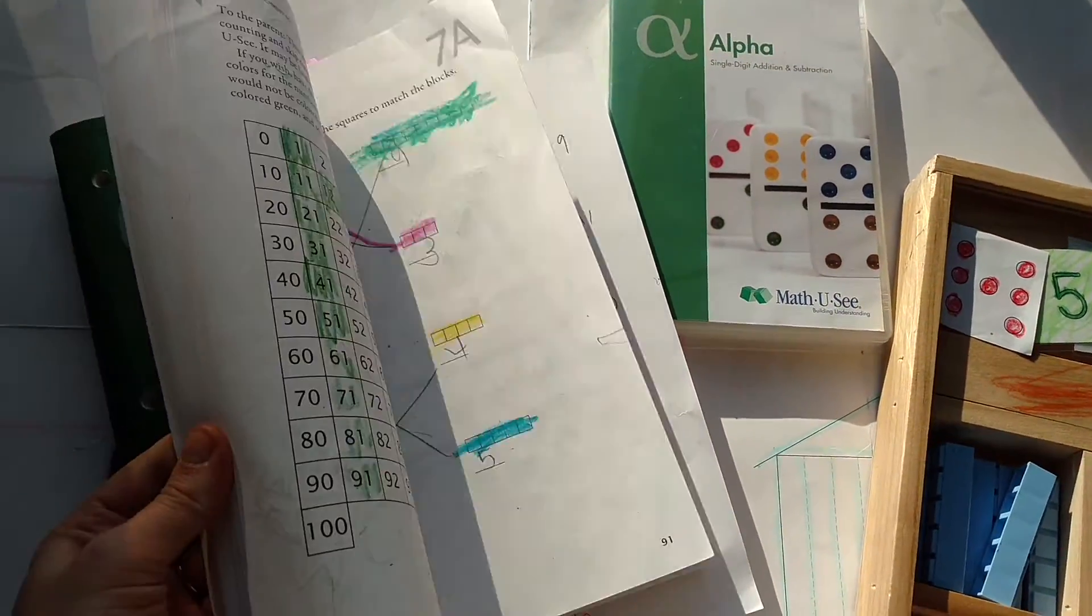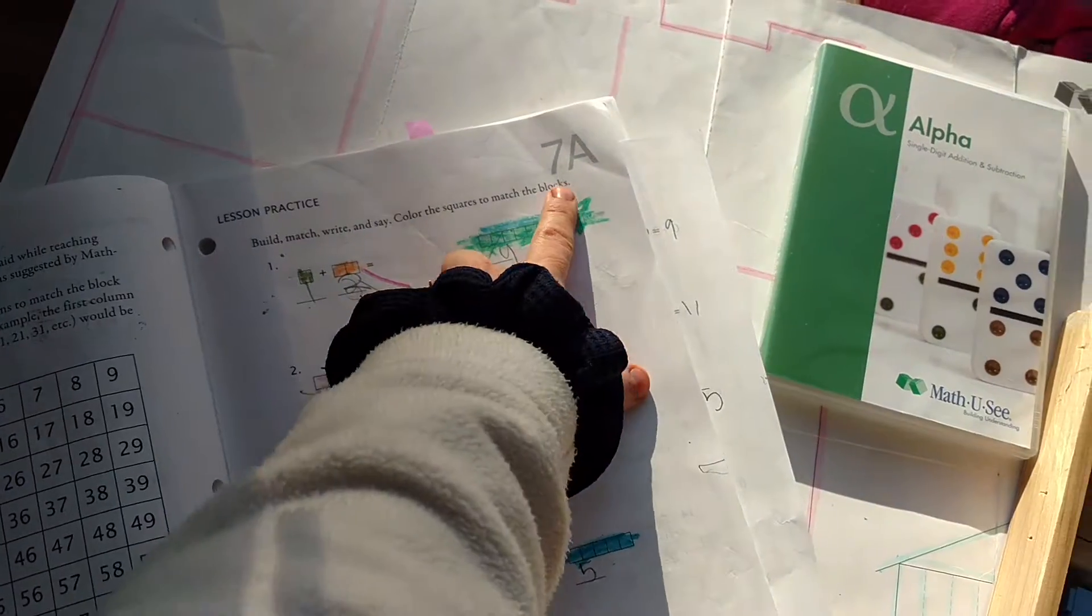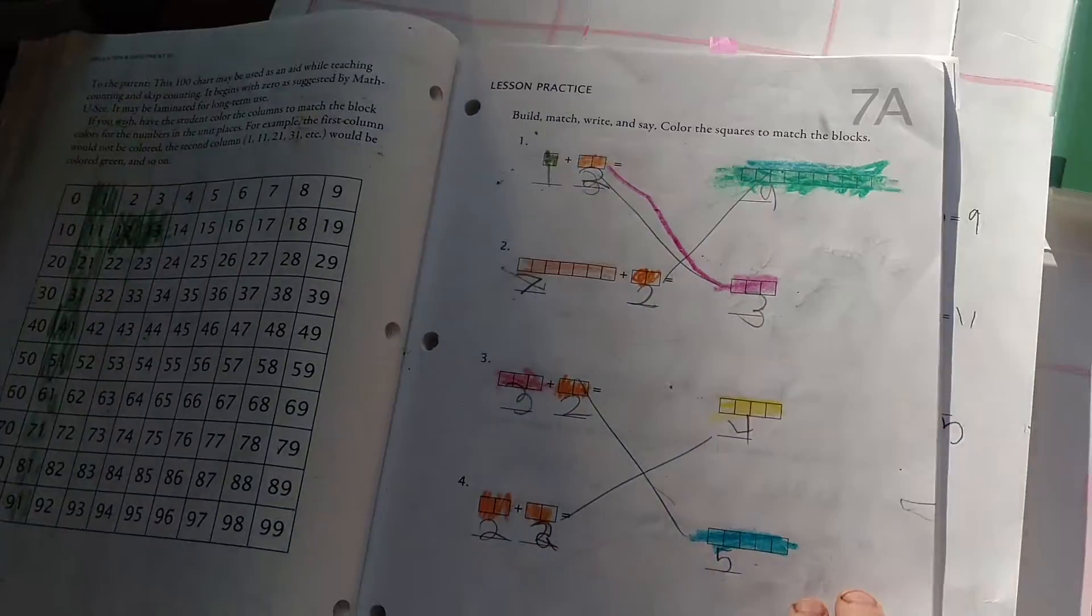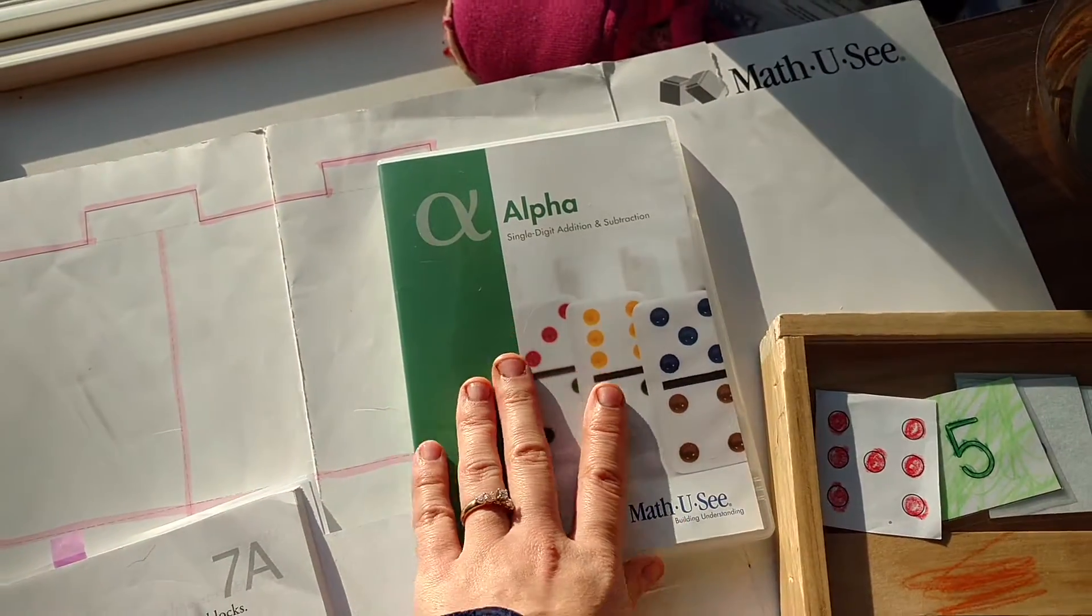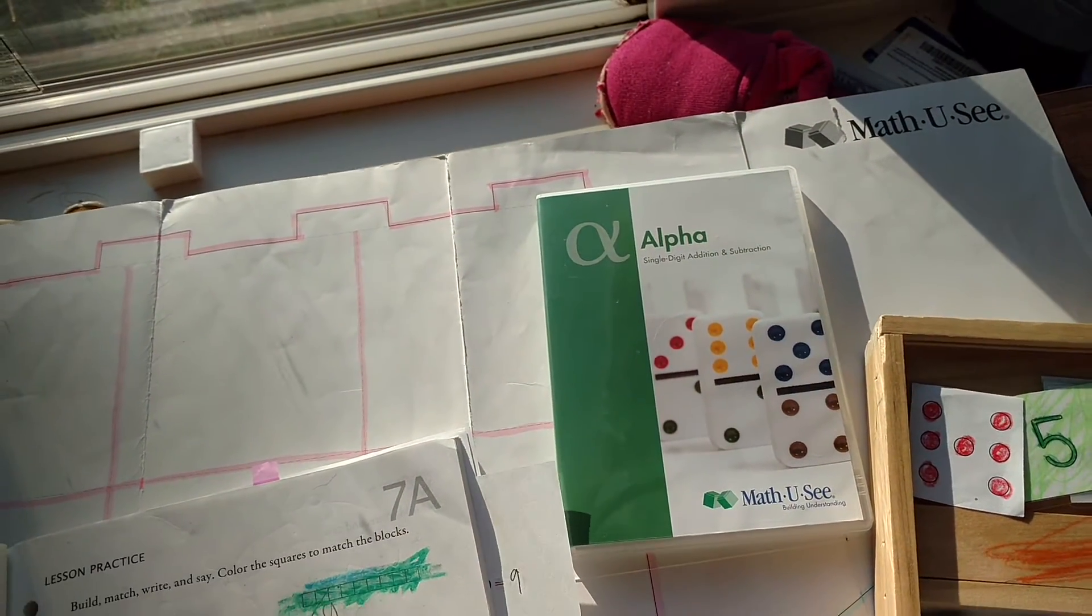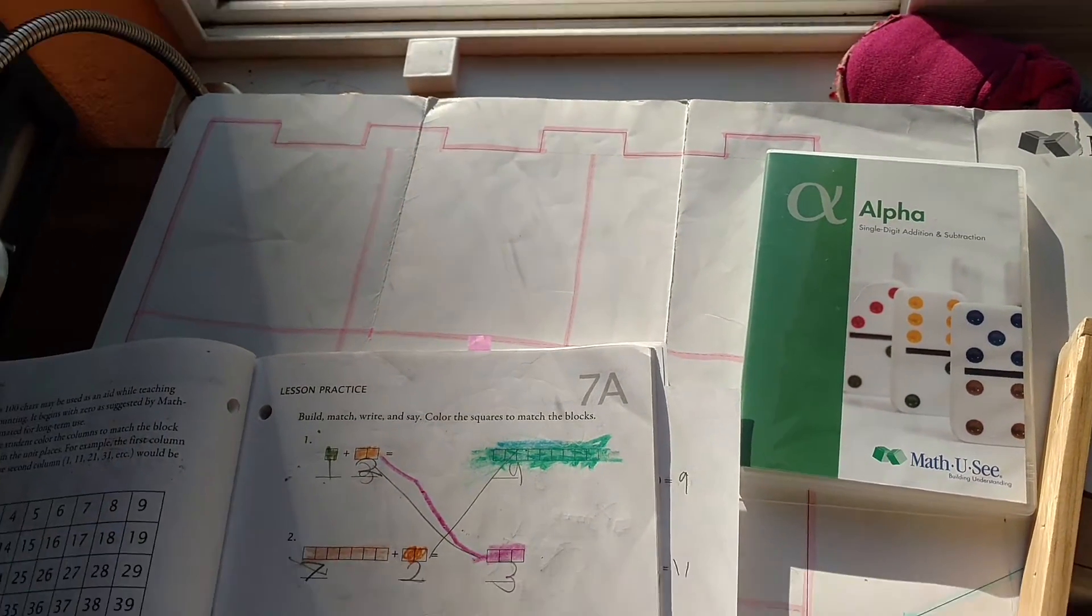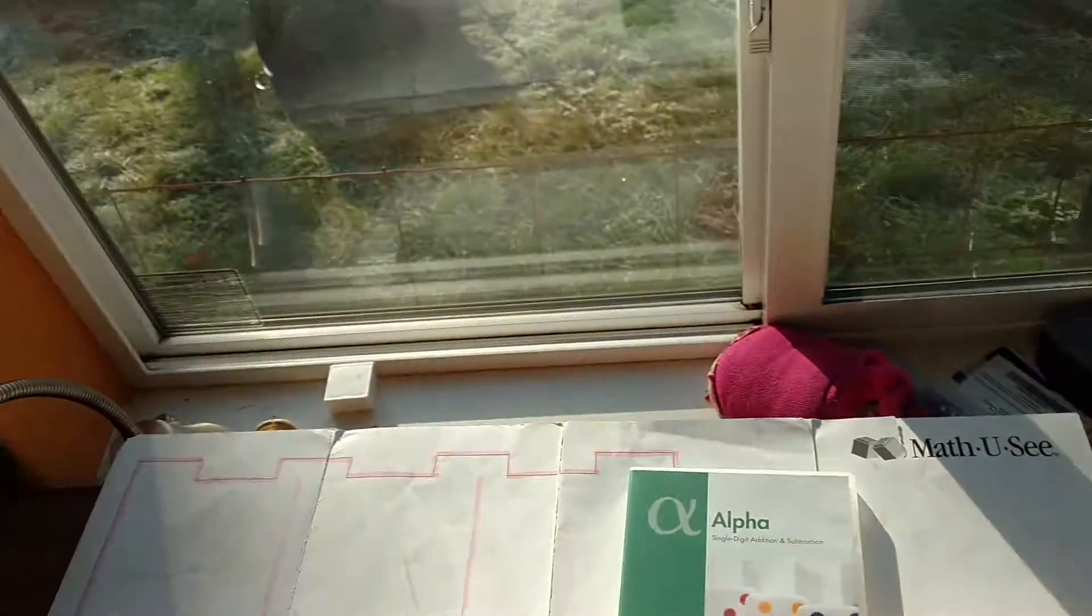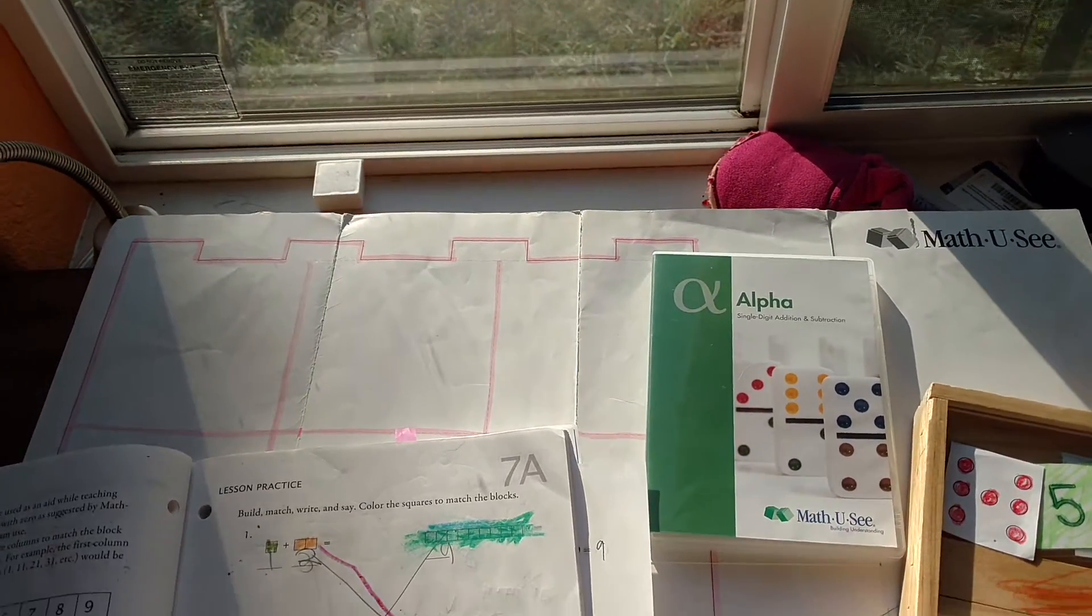The basic general outline for how it works is you start out with your first lesson. I just opened a random one. The first one comes with a DVD and you'll watch the videos, and the fellow does a really good job. There's kids in the background. He's got a big whiteboard and manipulatives. He does it up there and it gives the kids a chance to learn from somebody else for just a little bit.